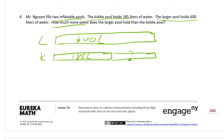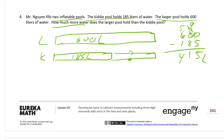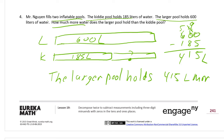We need to find the difference: 600 minus 185. We have zeros in our minuend, so we break up a hundred — 5 hundreds left — giving us 10 tens. Break up one of those tens, leaving 9 tens, and we get 10 ones. 10 minus 5 is 5 ones. 9 minus 8 is 1 ten. 5 minus 1 is 4 hundreds. The difference is 415 liters, so the larger pool holds 415 liters more water.